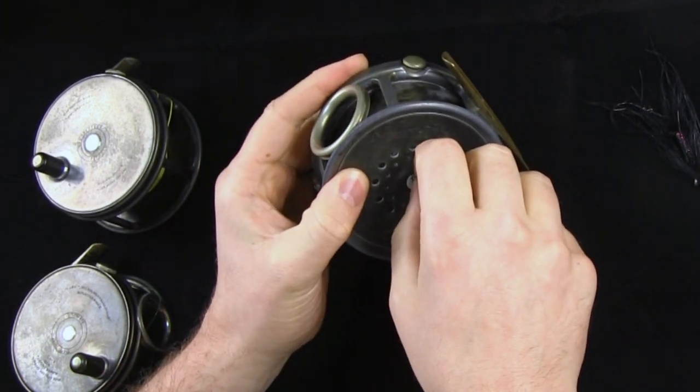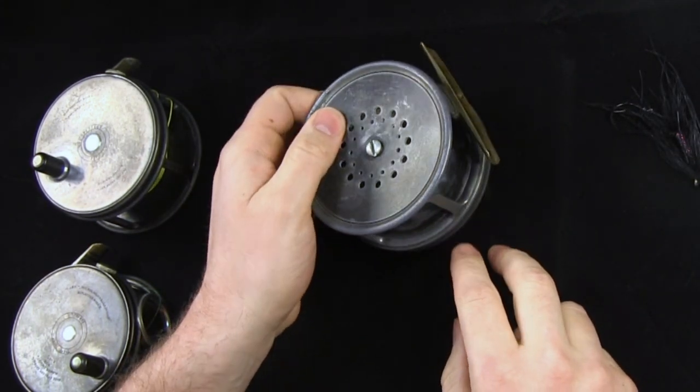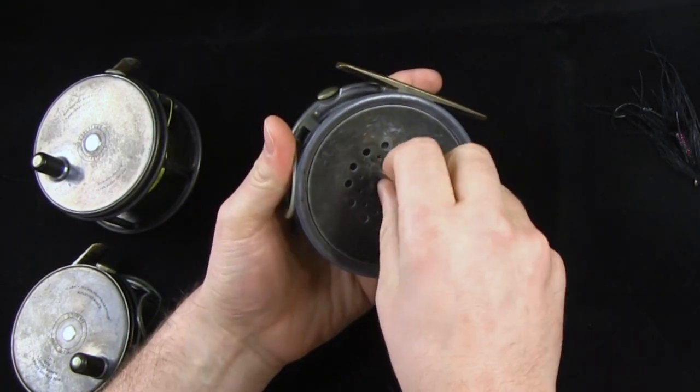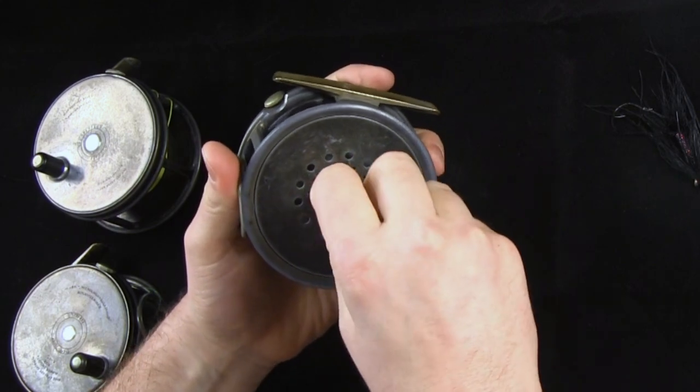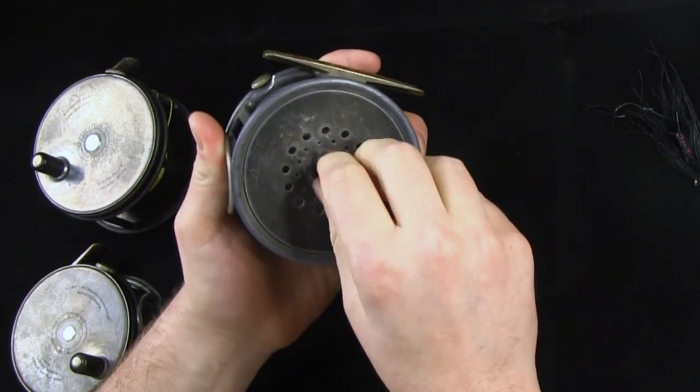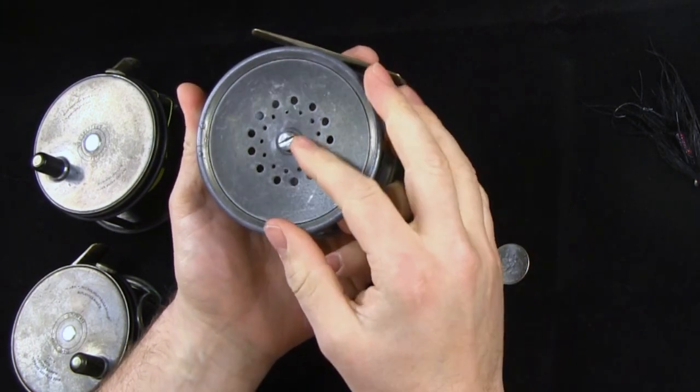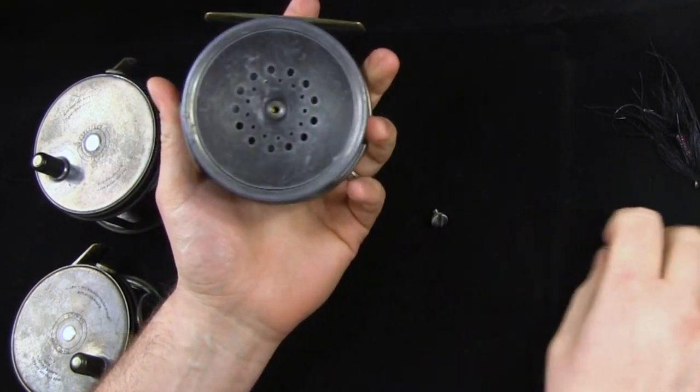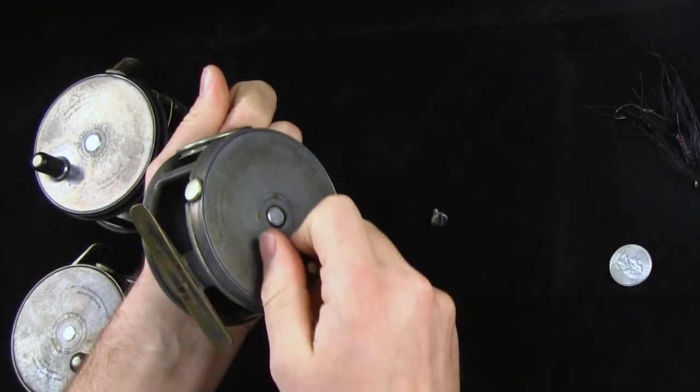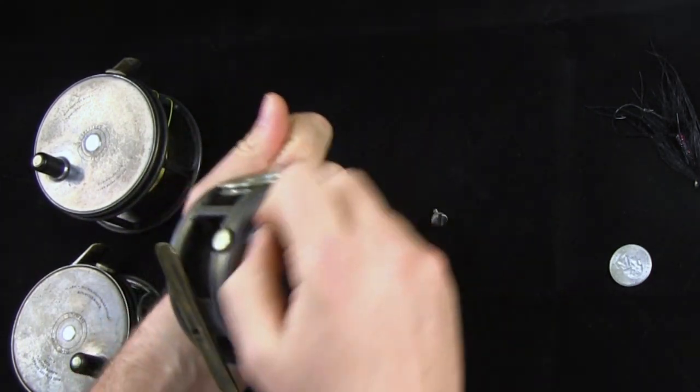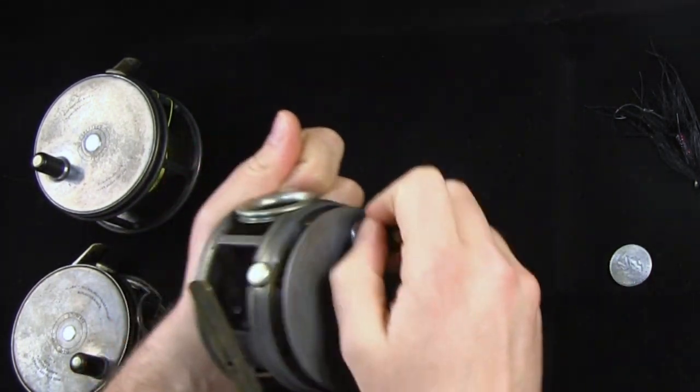Let me get a penny real quick. I've got a coin here and it's really the easiest way to back off these screws. Retaining screw's out. And it's the same way to back off the check. You can hear this click is a little different. I'll show you why in a second.